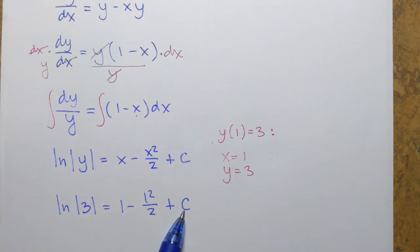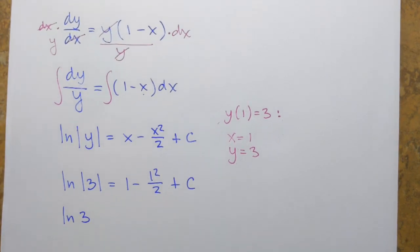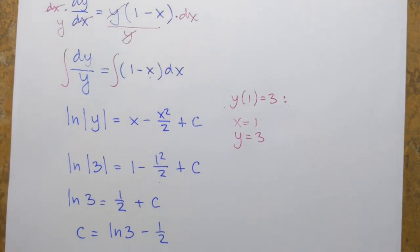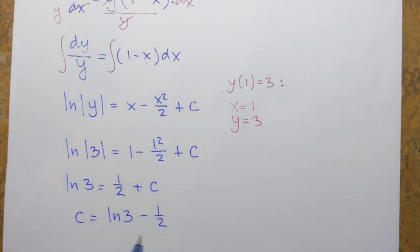So what is that constant c? So I'll have ln of 3. I can drop absolute value. Absolute value of 3 is 3, equals 1 minus, well this is 1 half so that's 1 half plus c. So c equals ln of 3 minus 1 half. That's what that constant equals to. I mean it's written in maybe not very pretty form, but I'll just leave it like that. That's okay. I mean we know it's a constant.